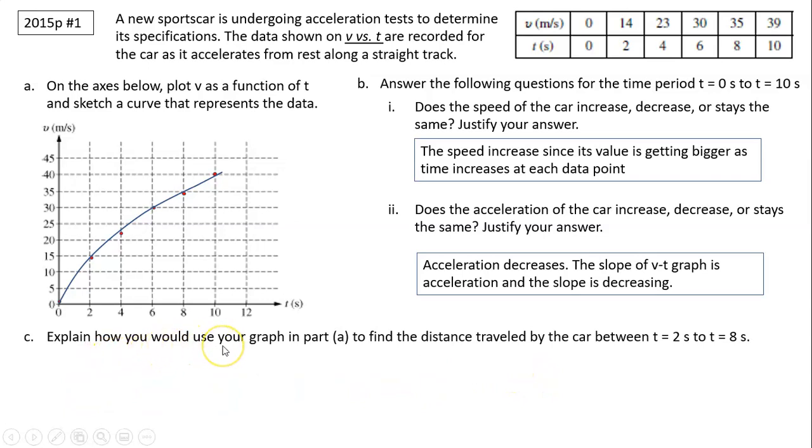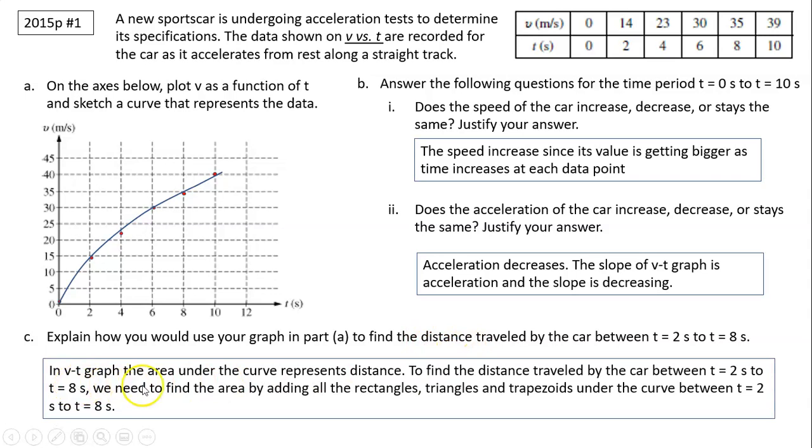Part C explains how you would use your graph in part A to find the distance traveled by the car between t equals 2 to t equals 8 seconds. In v-t graph, the area under the curve represents distance. So to find the distance, we have to find the area between t equals 2 to t equals 8 seconds. We can approximate by counting all the rectangles, then adding the rest, trapezoids and triangles together between this time period.